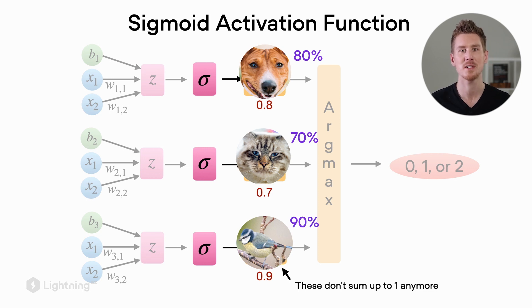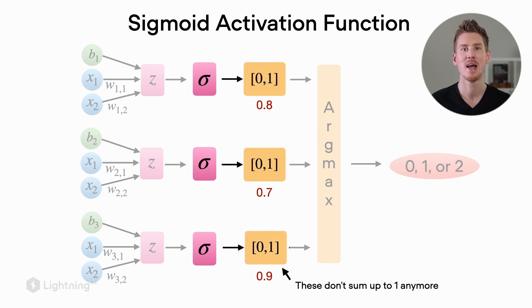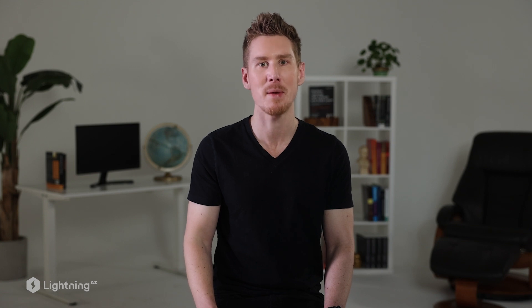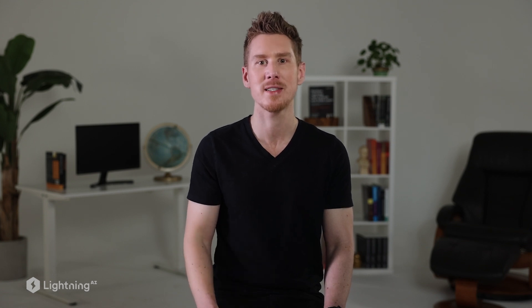For a statistician, this might not make any sense or might be quite unintuitive. That's because we have probability scores that don't sum up to one. If we think about classes like cat, bird, and dog, we want them to sum up to one if they are mutually exclusive classes.